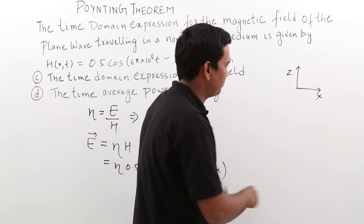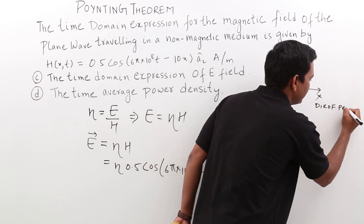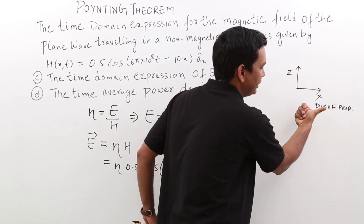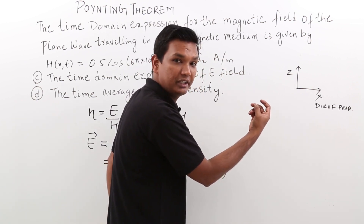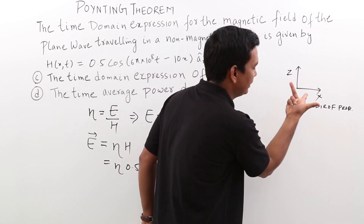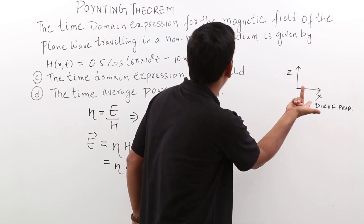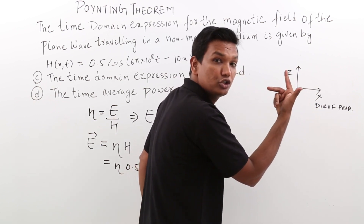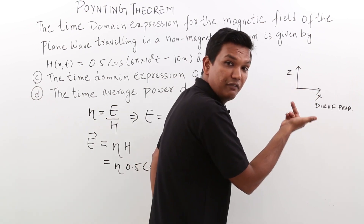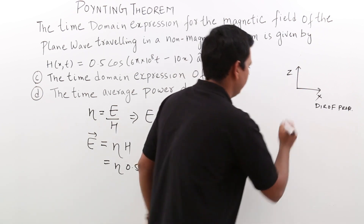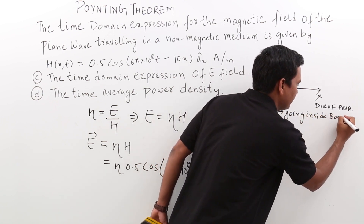The thumb points in the direction of propagation which is the x axis. The middle finger should point in the direction of the magnetic field (z direction). With the thumb along x and the middle finger along z, the forefinger — which indicates the direction of the electric field — points inside the board. So the E field variation is going inside the board.